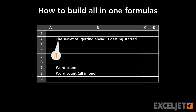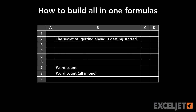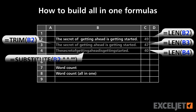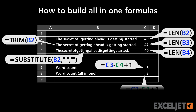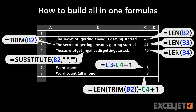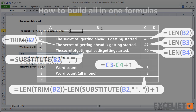In this video we're going to build a formula that counts the number of words in a cell. This cell has eight words in it, and we're going to build a formula step-by-step that gives us the number eight. We're going to use helper formulas to do that, and when we're finished we'll combine those helper formulas into a single all-in-one formula that we can use anywhere.